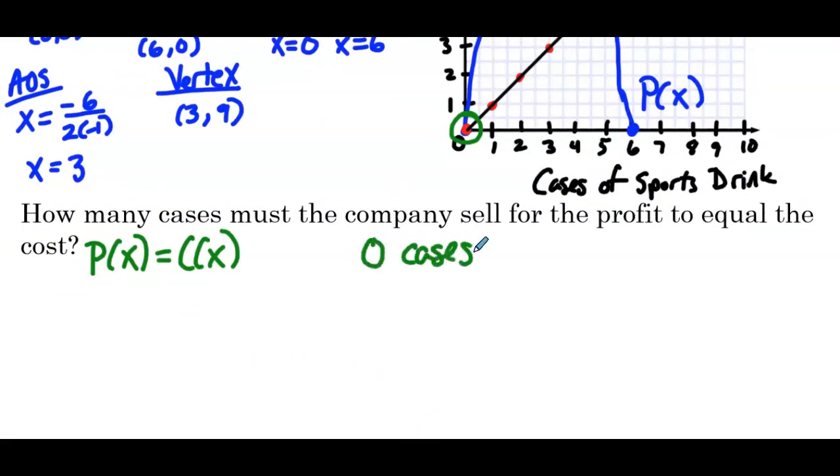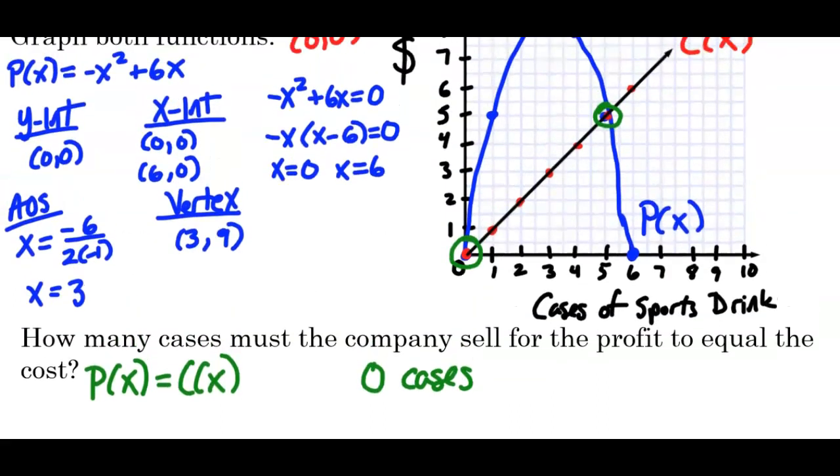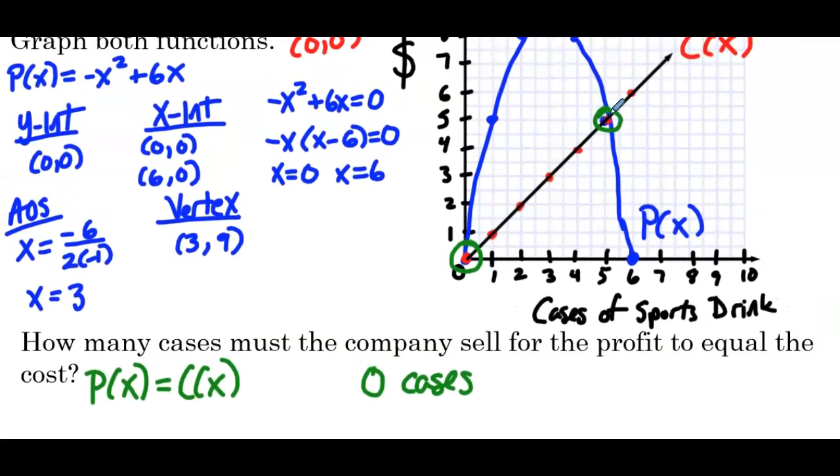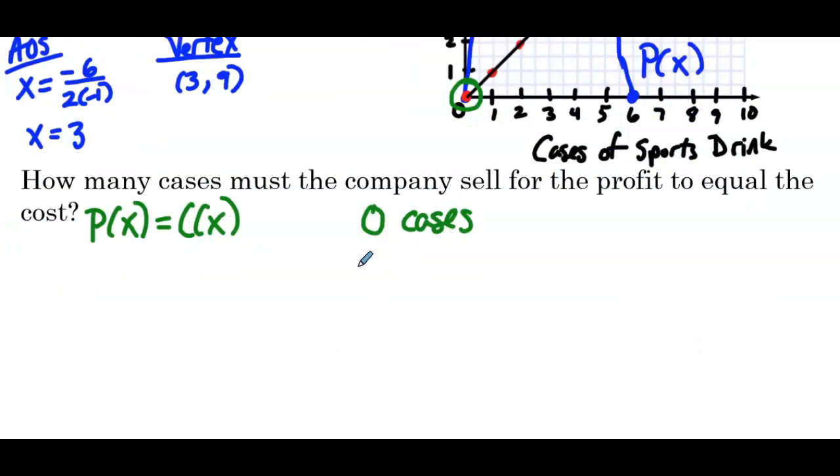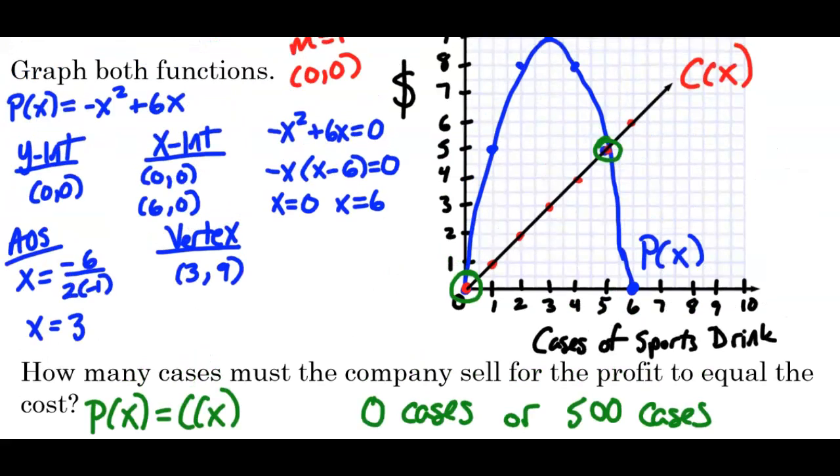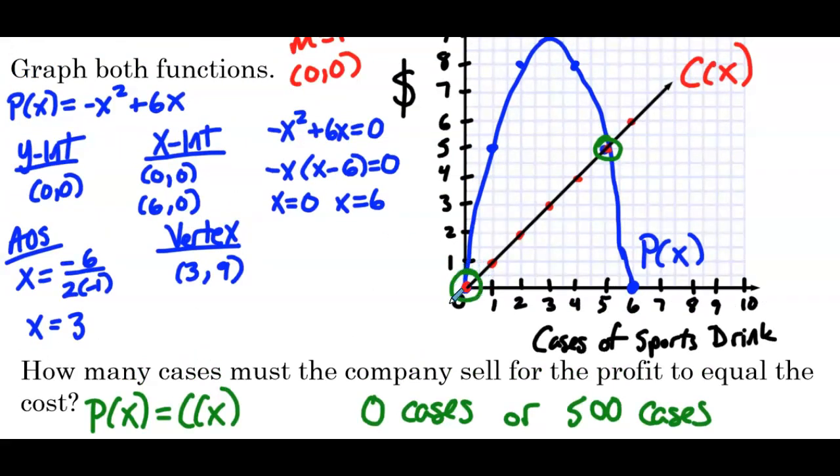Okay, so we see the two points of intersection. We're essentially looking for where P(x) is equal to C(x). We're looking to solve that equation. So that happens at two points. Either zero cases, right? If they sell nothing, it costs nothing. They would make no profit. Or at x equals 5, but x is in terms of hundreds. So that means or 500 cases. Okay, so if they sell zero cases or 500 cases, the profit would equal to the cost. So they would make no money, right? They would profit exactly what it costs.